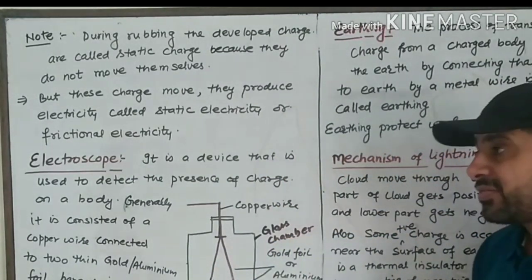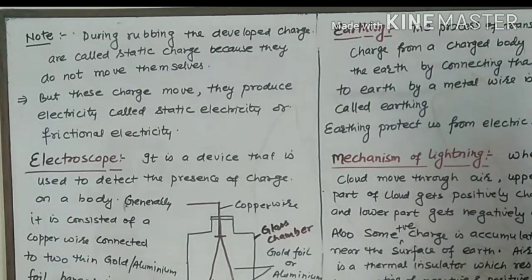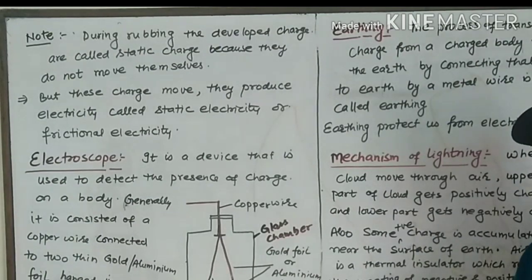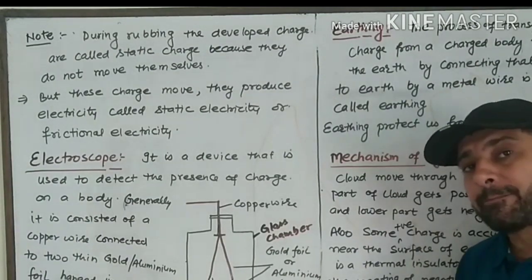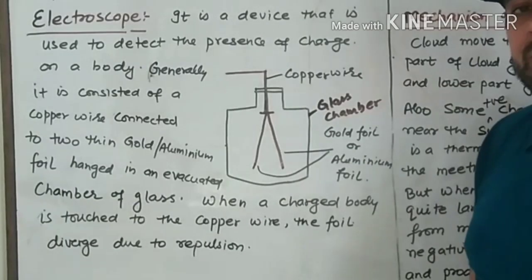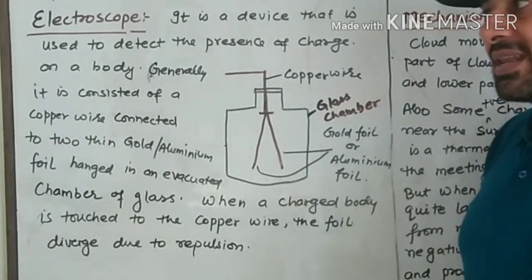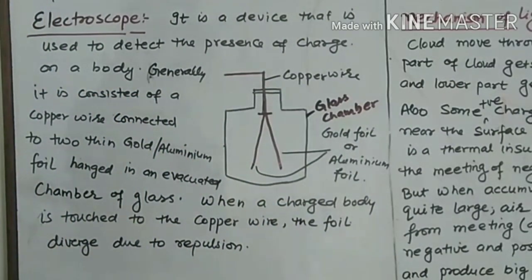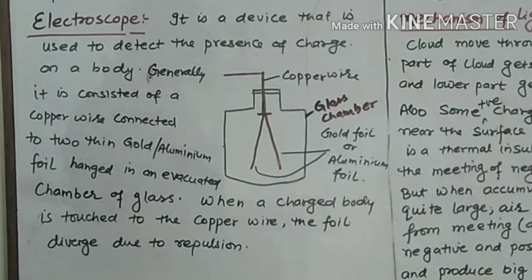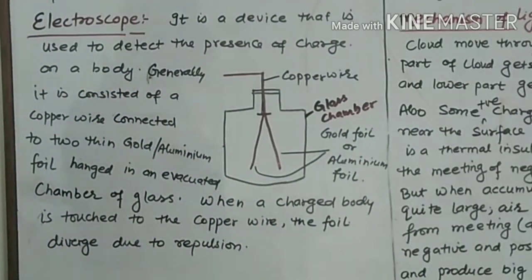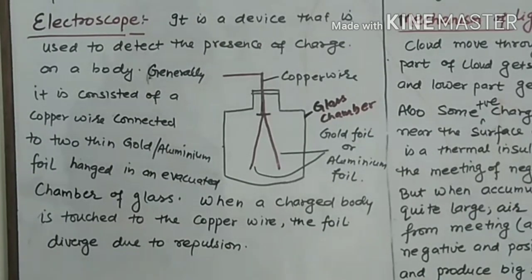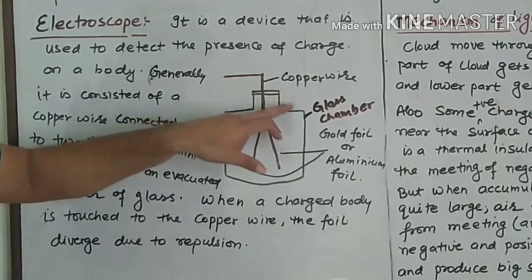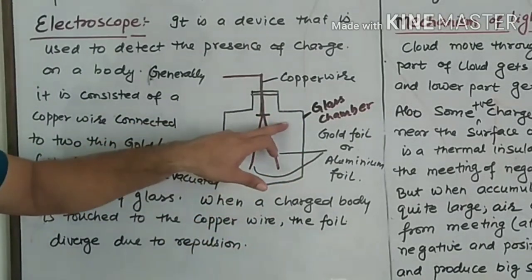Now we discuss about the electroscope. An electroscope is a device that is used to detect the presence of charge on a body.